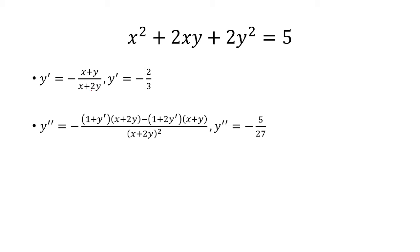Minus, take the derivative of the denominator. Derivative of x is 1. Derivative of 2y is 2y prime. Multiply that by the top. That's going to be all over the denominator squared. Now at this point you can plug in x equals 1, y equals 1, and y prime is negative 2 thirds. To get that the second derivative is negative 5 over 27.